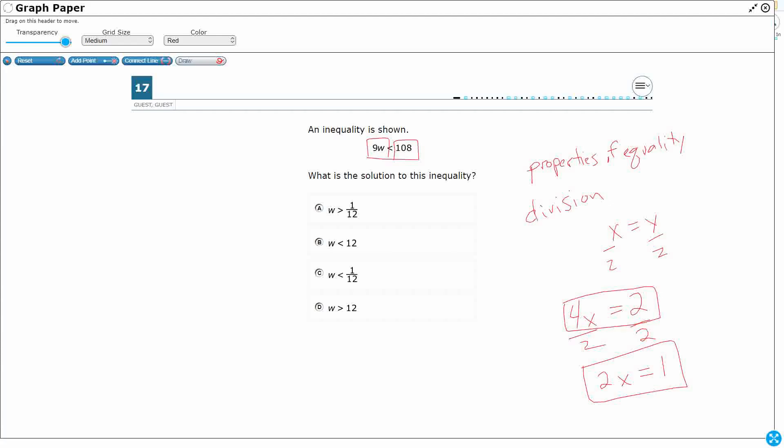Now there's a multiplication property of equality, which means you can multiply both sides of the equation by the same thing. There is addition and subtraction. You can add or subtract both sides of the equation. Now in this case, we have an inequality, but the same thing holds. Now why do I want to know about the division property of equality? Because I want to isolate this variable.